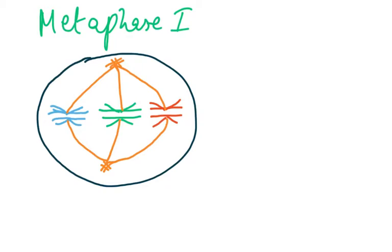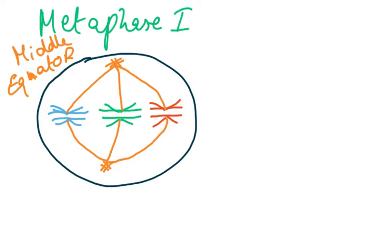Next is metaphase 1. In metaphase 1 — M for metaphase, M for middle — the word is actually the equator. So they align at the equator. The three pairs have aligned at the equator, and one of each pair, with its copy, is going to be pulled to the poles of the cell. Please do not use the word end — use the word poles.